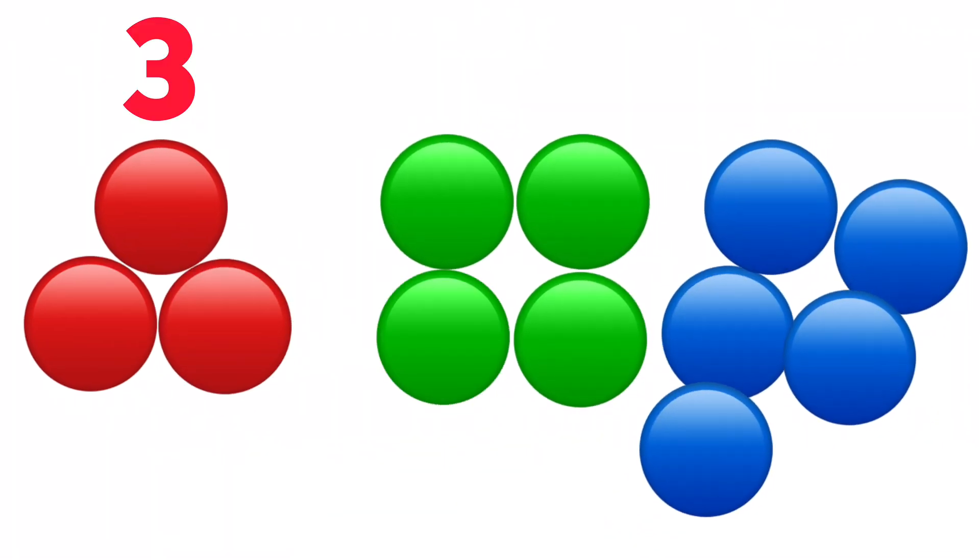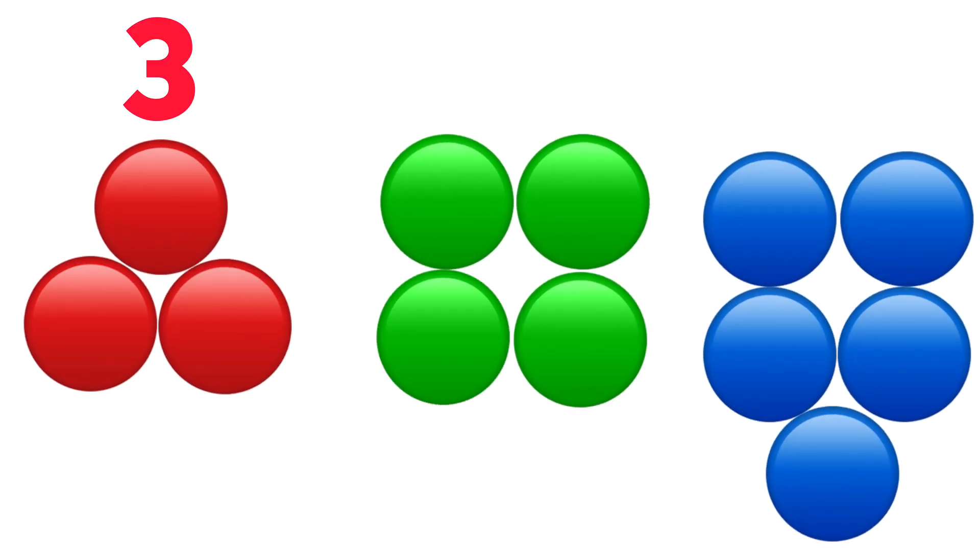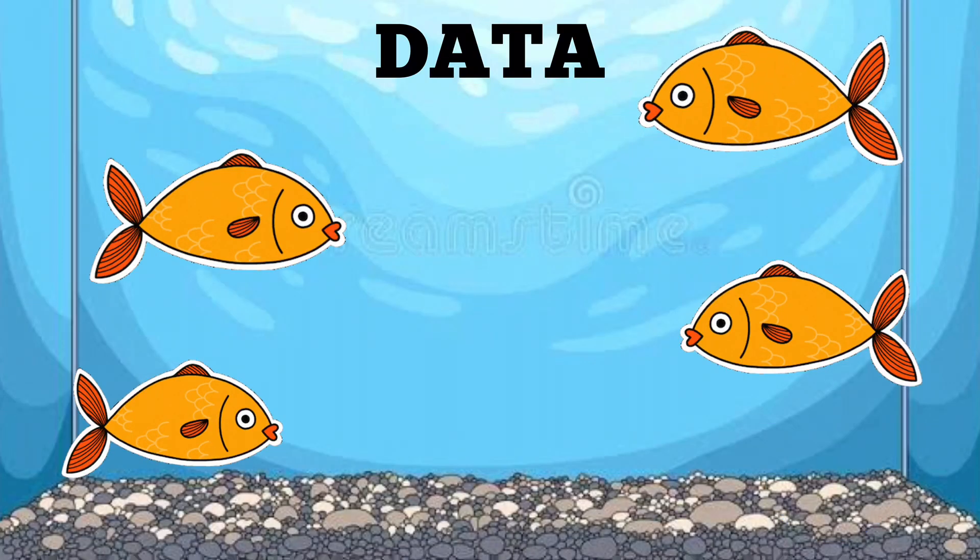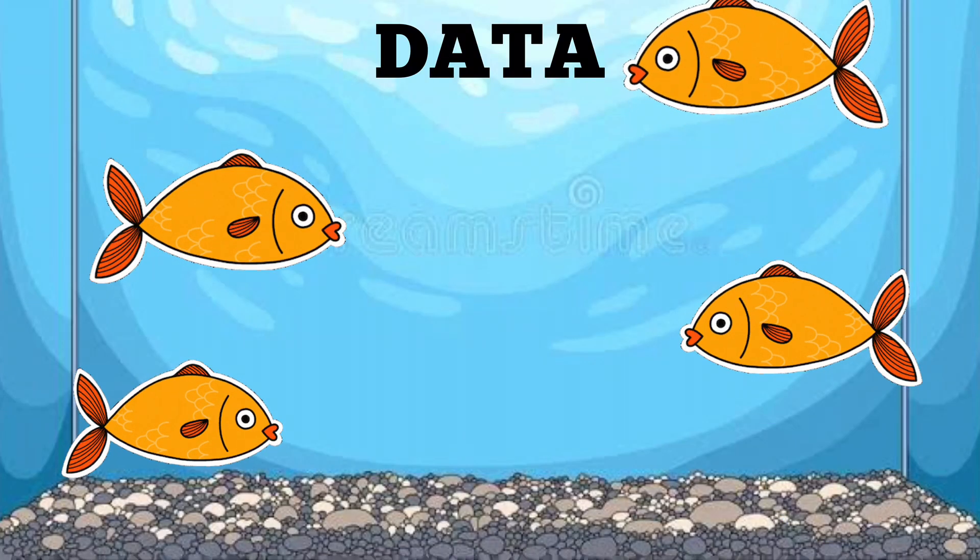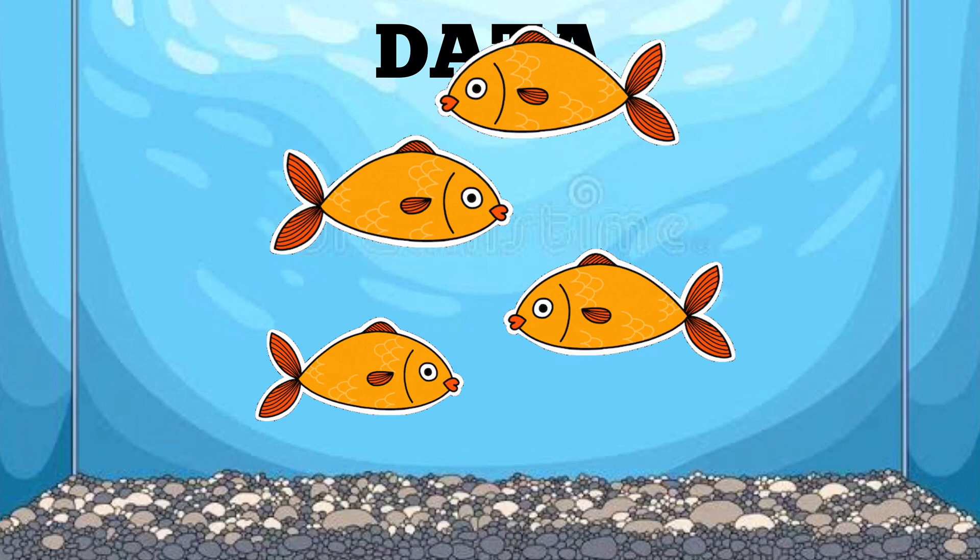Hence we have three red colored marbles, four green colored marbles, and five blue colored marbles. Now let us find the data count of orange fishes in a tank. How many are there?